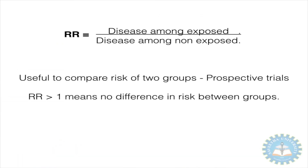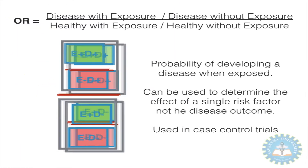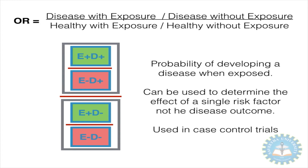Relative risk is useful to determine and compare the risk of two groups. It is used in prospective clinical trials and randomized control trials. If the RR value is greater than 1, it is generally considered that there is no difference in the risk between the two groups. The next parameter to determine causation is called the odds ratio.